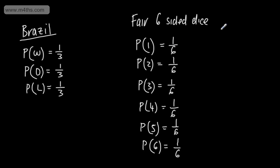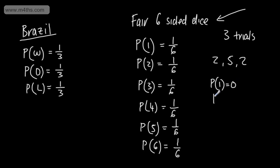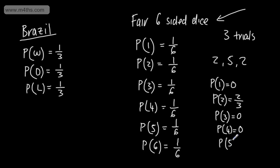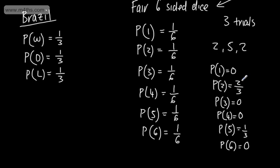Let's say I did 3 trials to check if this was a fair dice. On the first roll I had a 2, on the second I had a 5, and on the third I had a 2. From this, the probability of rolling a 1 is 0, the probability of a 2 is 2 thirds, the probability of 3 is 0, the probability of 4 is 0, the probability of 5 is 1 third, and the probability of 6 is 0. Quite clearly, by carrying out only 3 experiments this is really poor — if I said the probability of rolling a 2 on the next go is 2 thirds, we can see that's pretty poor.